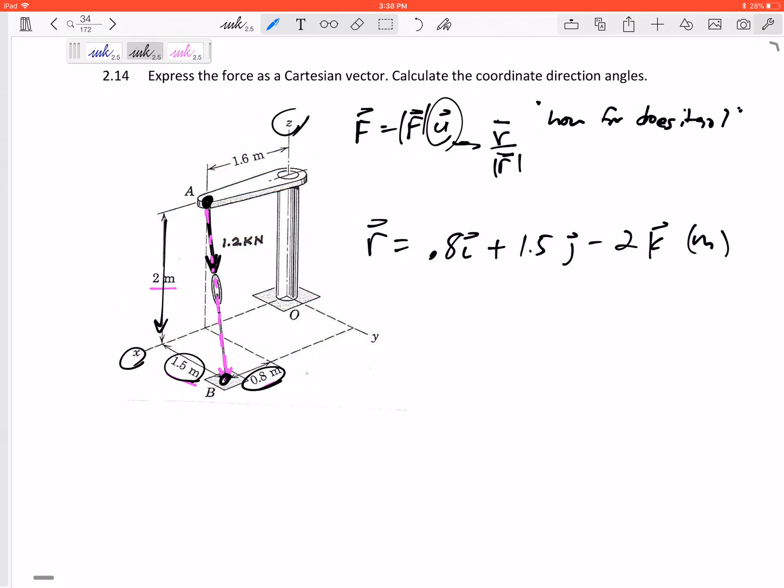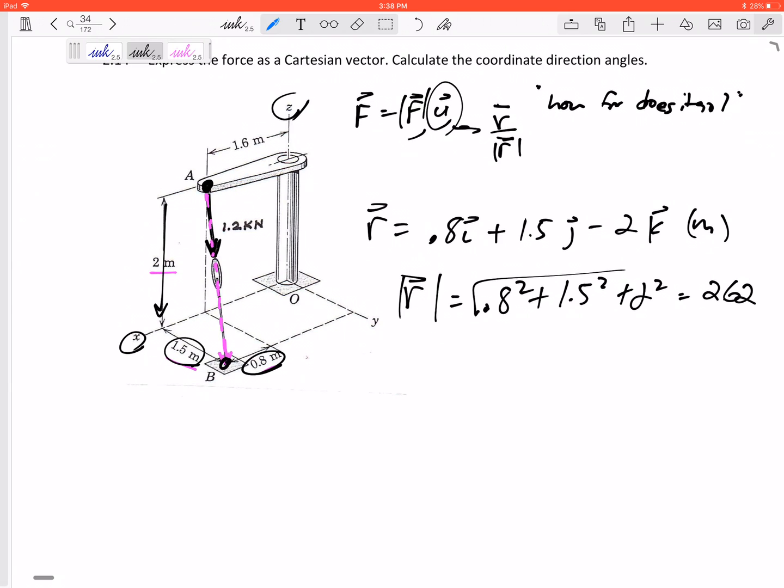That's my r, which has units of meters. What is the magnitude? 0.8 squared plus 1.5 squared plus 2 squared, take the square root, that would be 2.62.